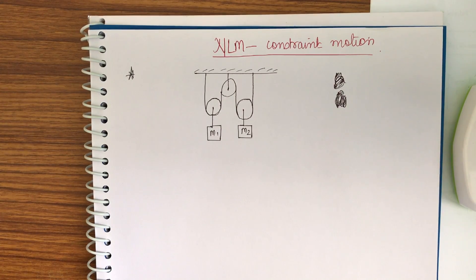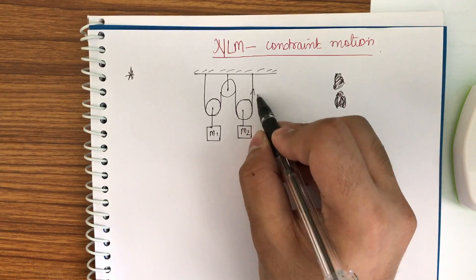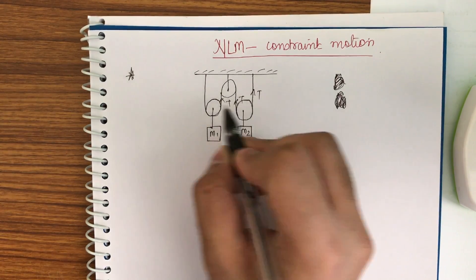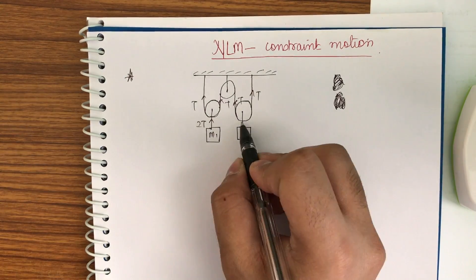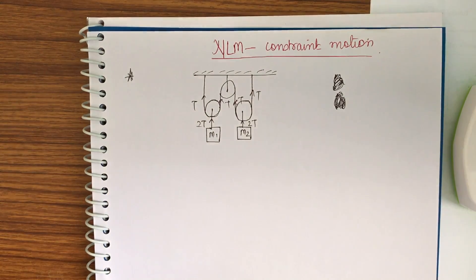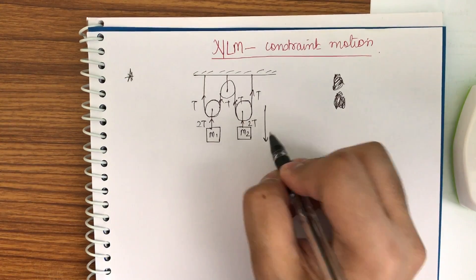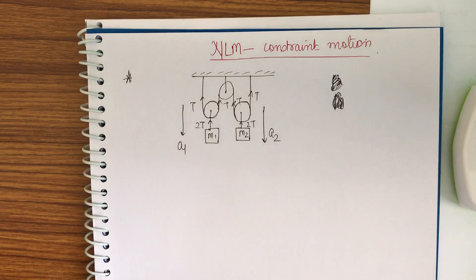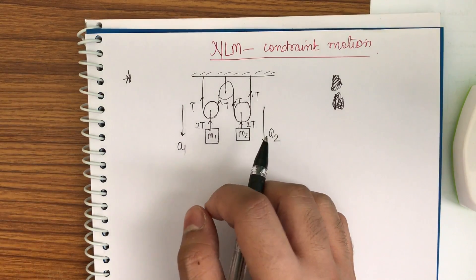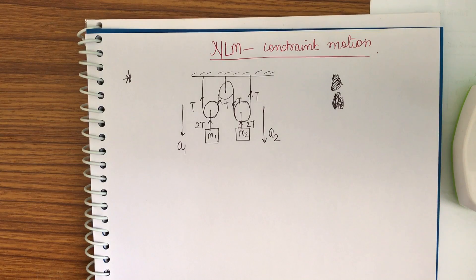First of all, you must find the tensions. So let me assume tension here is T, so here T, T, and T. In this string it will be 2T, and in this string it will be 2T. Now assume that all of the masses are going downwards. Let me take the acceleration of this as A2 and this as A1. The accelerations are different because the pulley is also moving — the pulley is not at rest. So let me assume all masses are going down; if they are not going down then the acceleration would be in negative terms.